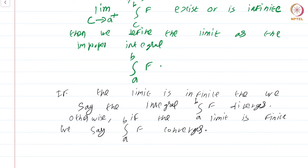Note carefully: the integral A to B of f could not exist at all in the first place. If it exists, it could either converge or diverge. If it converges, the value is going to be a finite real number. If it diverges, it is going to be either plus or minus infinity.